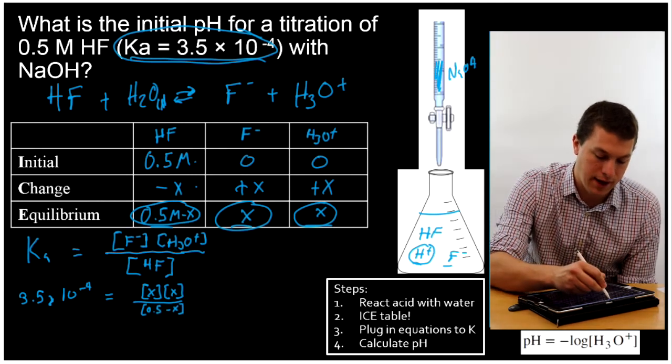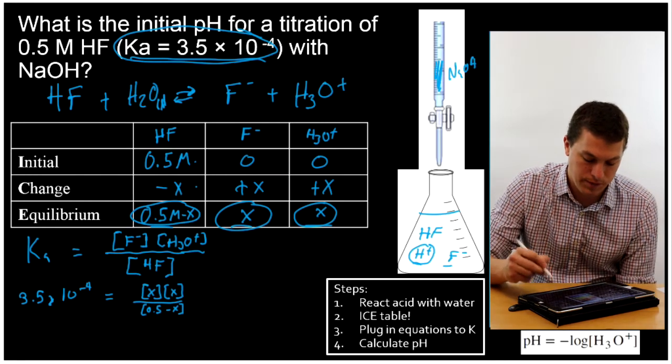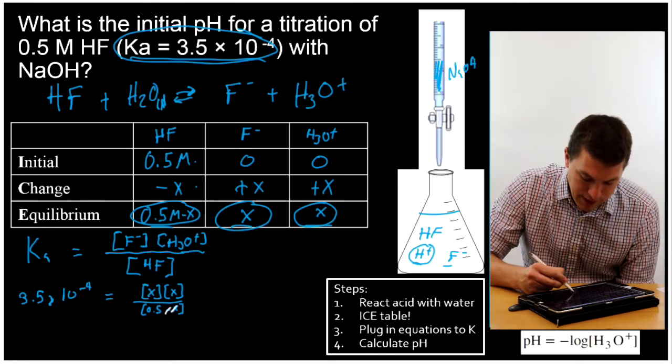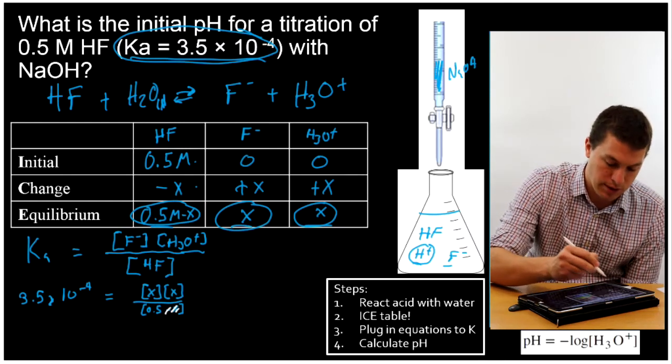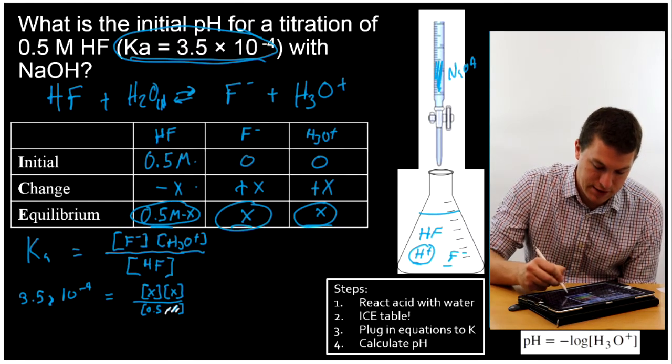Now here we can take advantage of the fact that my Ka is really small. And if your Ka is really small, we can actually drop the X down here. And that's almost always true for our weak acid weak base problems. When I drop that X, it makes the algebra a little simpler.